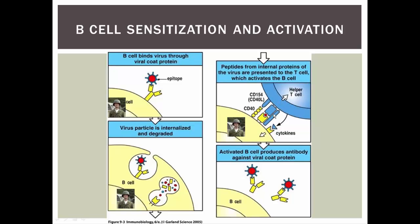The helper T cell comes and binds to this MHC class II and the antigen that's sticking there. In response to that, it's going to release a cytokine. This cytokine is going to activate the B cell, and that's going to convert the B cell to Captain America. Now he's got the oomph and the strength behind him to really go after these pathogens.